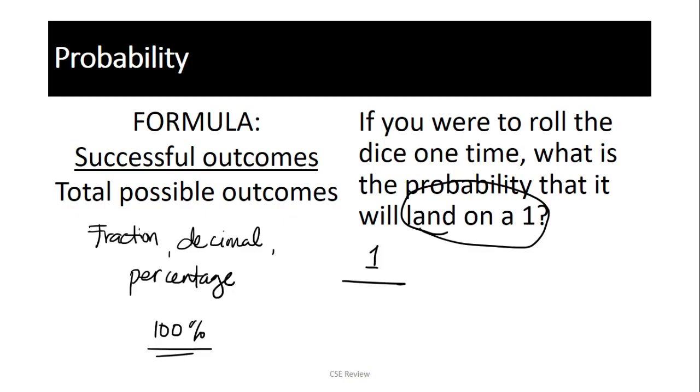Diba meron tayong 6 na mukha sa isang die? You have the 1, the 2, 3, 4, 5, and 6. Ibig sabihin, yan yung 6 na mukha niya. So, yung 6 na yan, yan ang ilalagyan natin sa ilalim. The answer is 1 over 6. The probability of rolling a die and getting a 1 is 1 over 6. Okay?